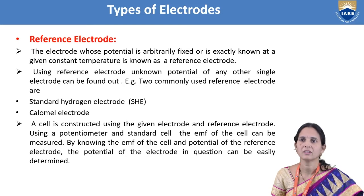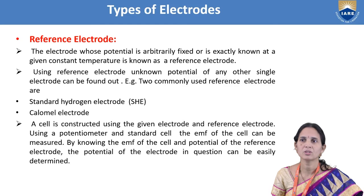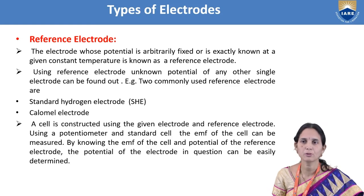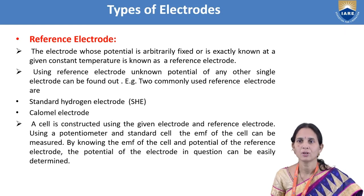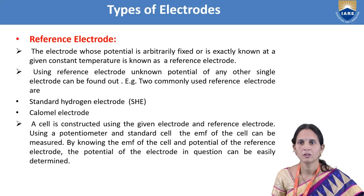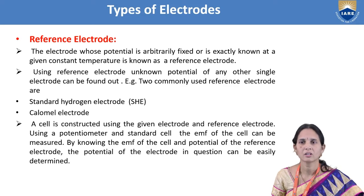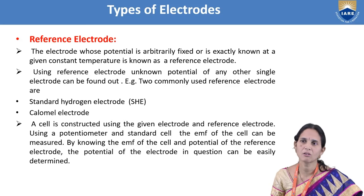The reference electrode is the electrode whose potential is arbitrarily fixed or exactly known at a given constant temperature. For example, at room temperature, 25 degrees centigrade, we will know the potential of the electrode — that is fixed and exactly known. Using a reference electrode, we can find out the potential of any other single electrode. Two commonly used reference electrodes are the standard hydrogen electrode and the calomel electrode. Others include the quinhydrone electrode and the glass electrode.